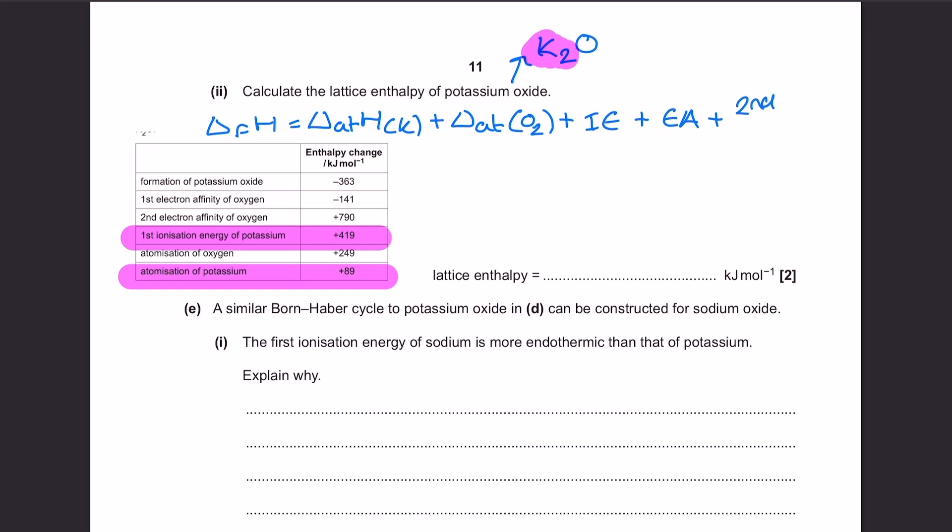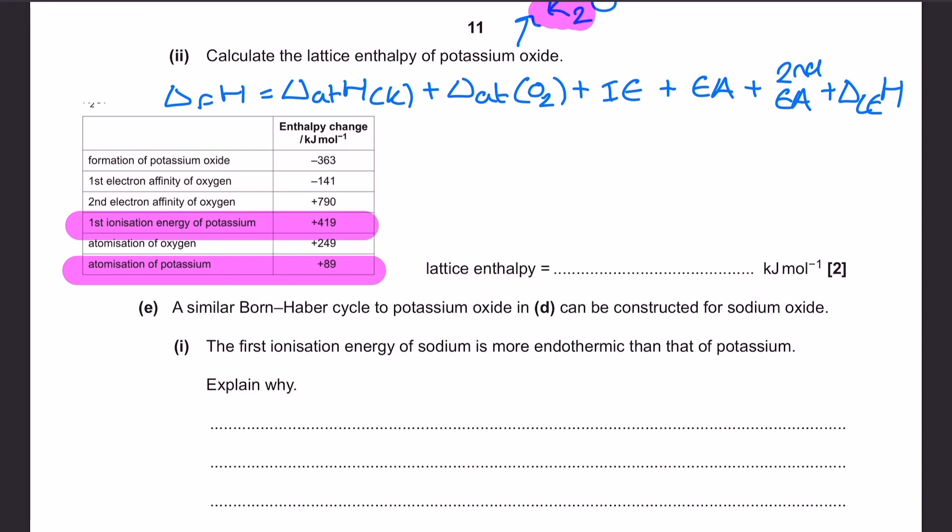The typical equation template to learn here is on screen now and you can see we've got the enthalpy of formation is equal to the atomization for the metal added to the atomization of the non-metal, the ionization energy for the metal added to the electron affinity of the non-metal. The second electron affinities and second ionization energies if relevant are added here as well, and we add that to the lattice enthalpy. All of that added together is equal to the enthalpy of formation.